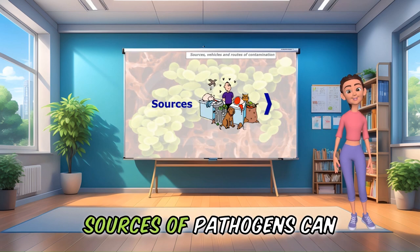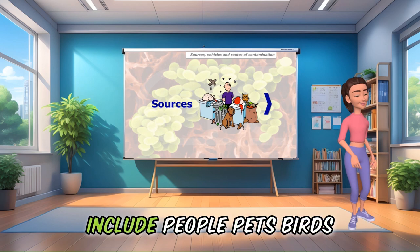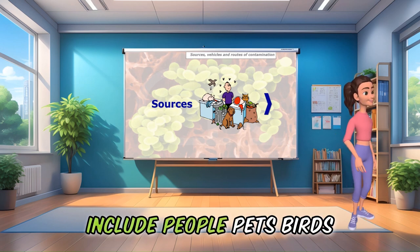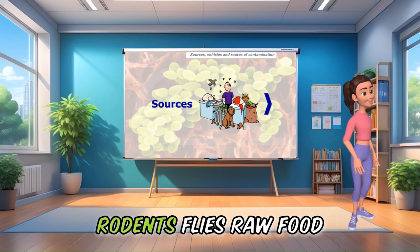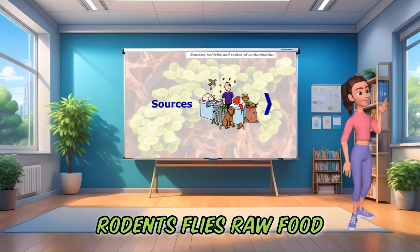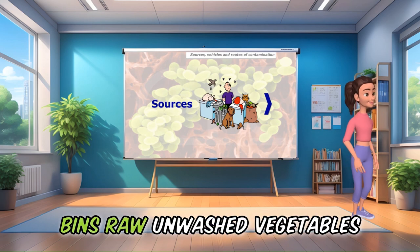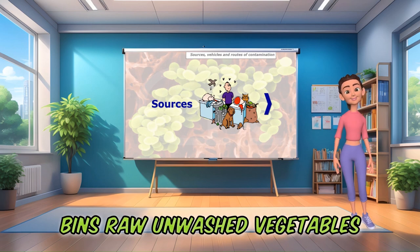Sources of pathogens can include people, pets, birds, rodents, flies, raw food, bins, and raw unwashed vegetables.